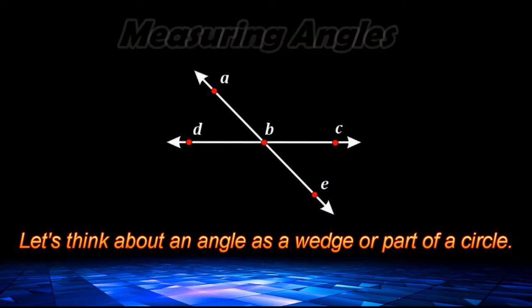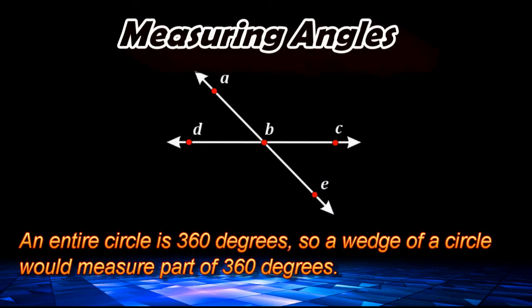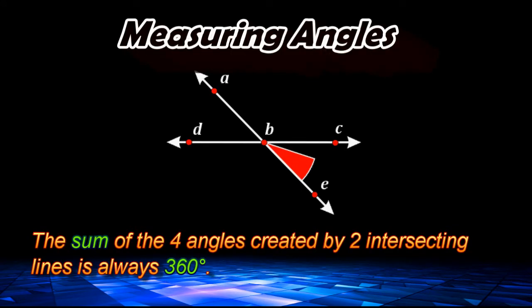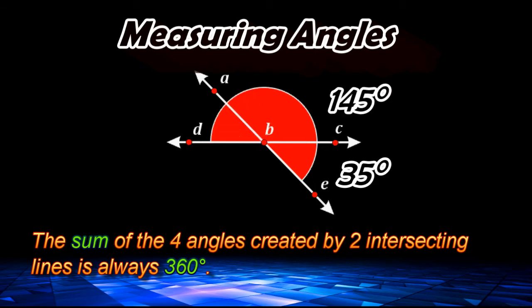Now, angles are measured in things called degrees, and we know that an entire circle is 360 degrees. So we can think about an angle like a wedge of a circle, where each of these four angles would take up part of an entire circle, or part of 360 degrees.